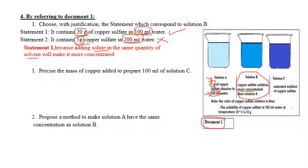Precise the mass of copper sulfate added to prepare 100 milliliters of solution C. Let's see the characteristic of solution C - it is a saturated solution.